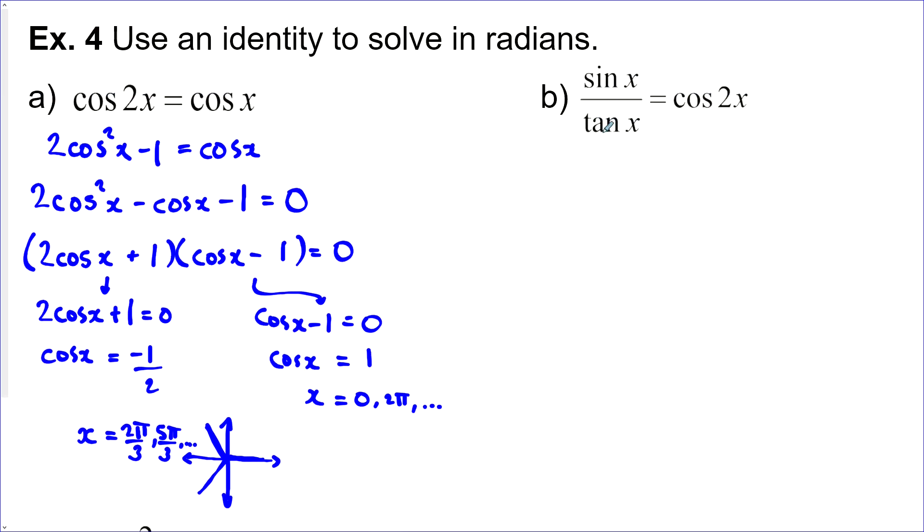Let's look at the next one here we've got a double angle here and we've got tan in the denominator. Let's get rid of tan first. So I've got sin x over sin x over cos x is equal to cos 2 x. Now I'm going to divide by this fraction so I'm going to multiply by the reciprocal.